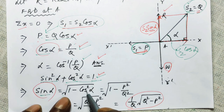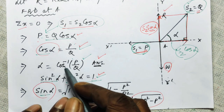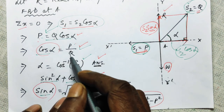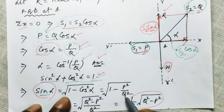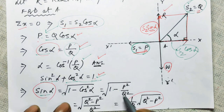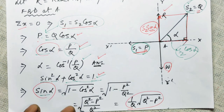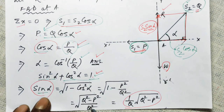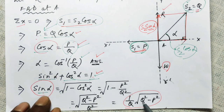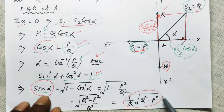Substituting cos alpha equals P over Q: sin alpha equals the square root of 1 minus P²/Q². Taking the LCM gives Q² minus P² all over Q², so sin alpha equals (1/Q) times the square root of Q² minus P².